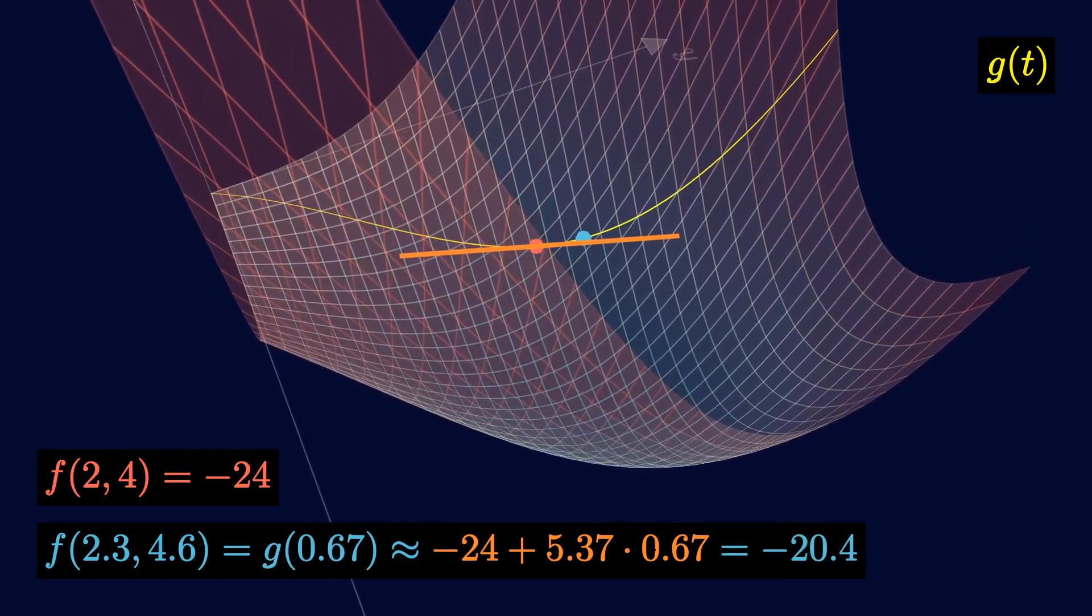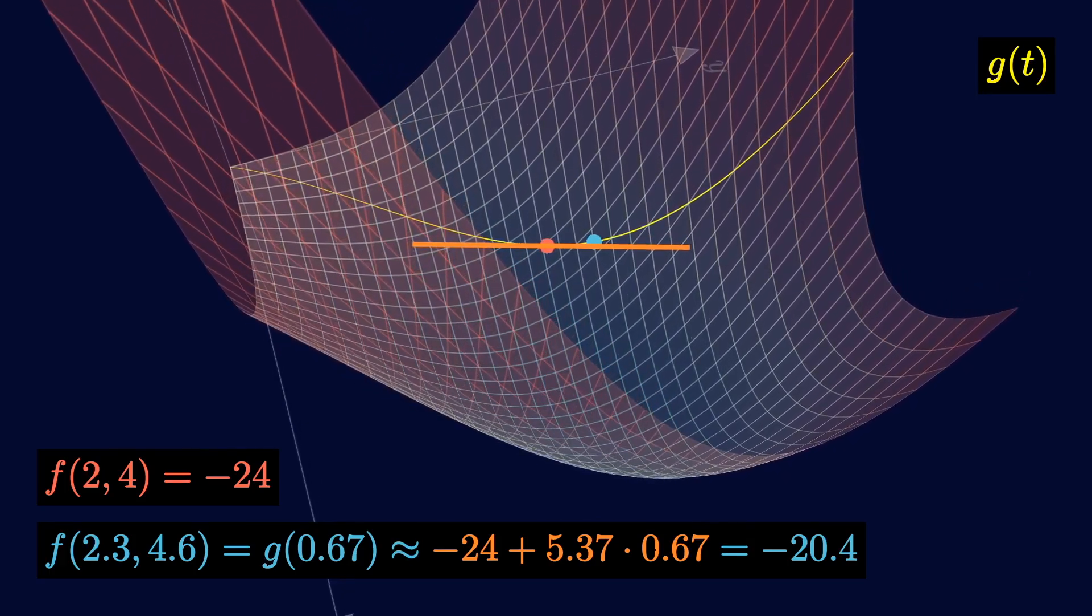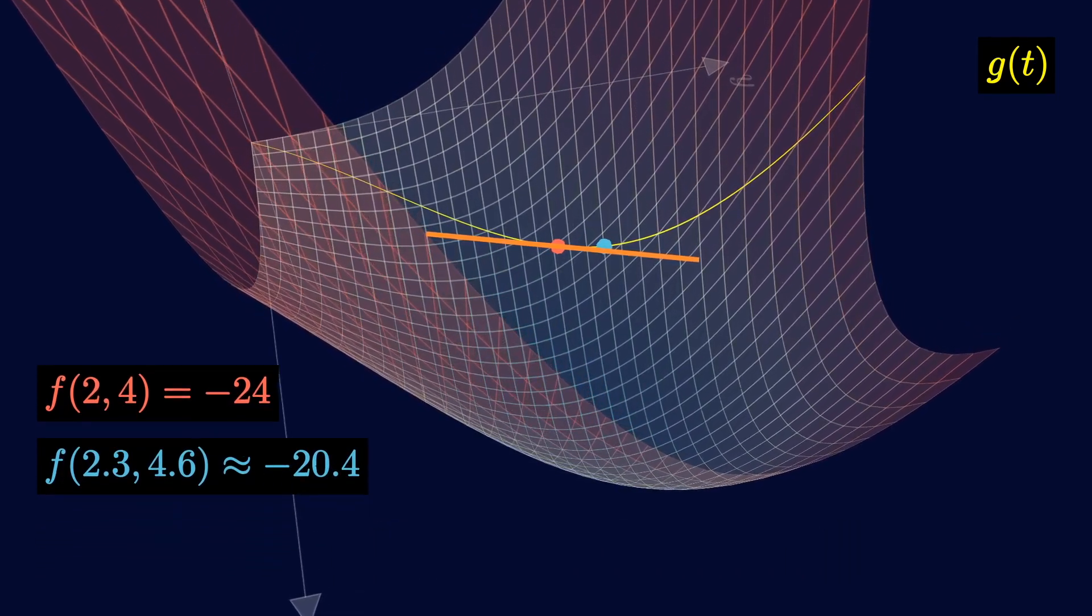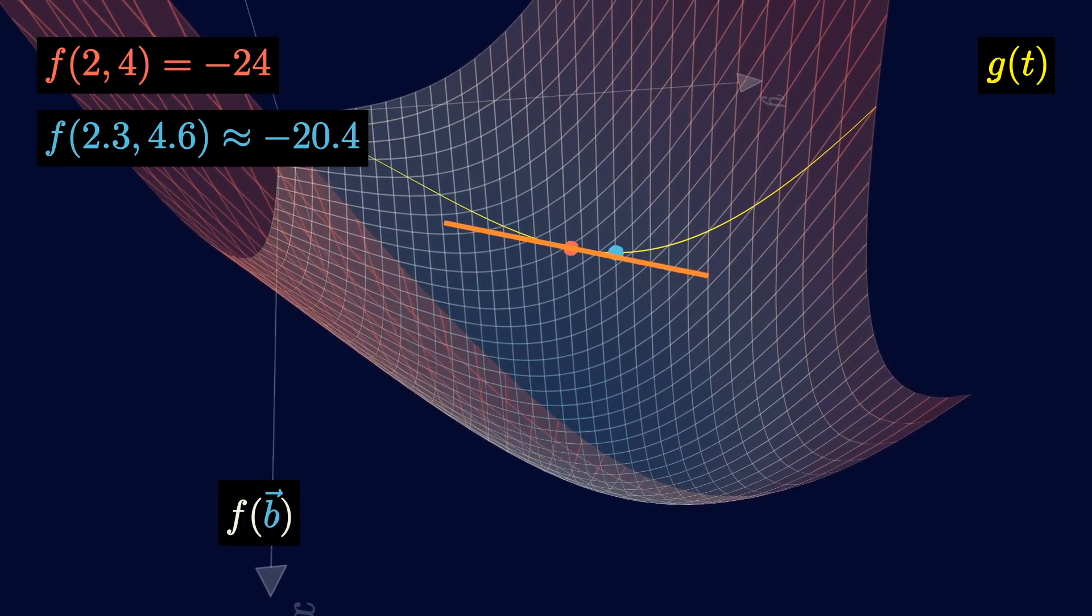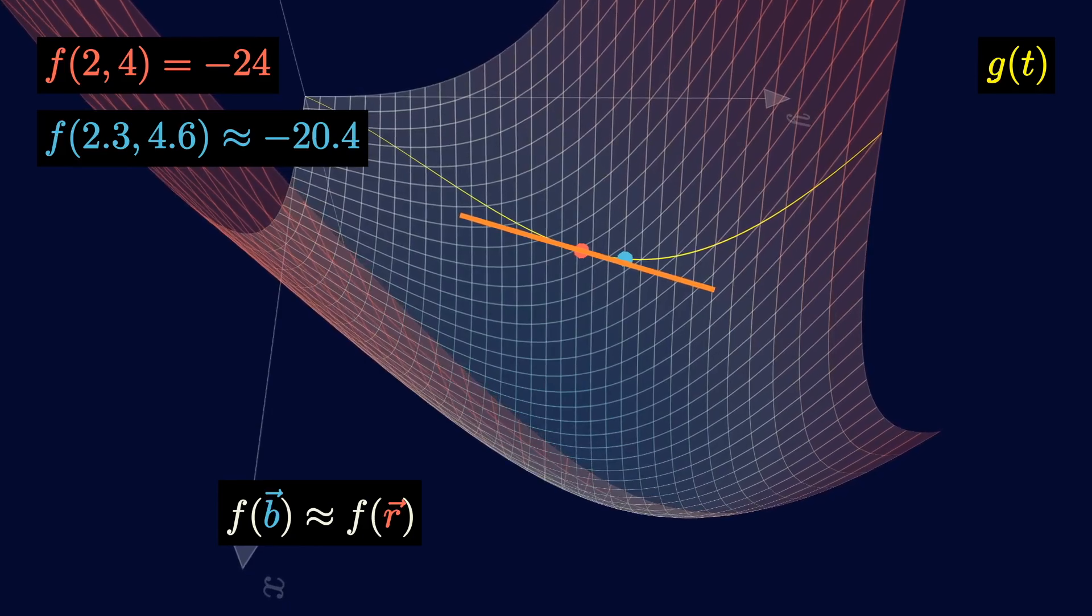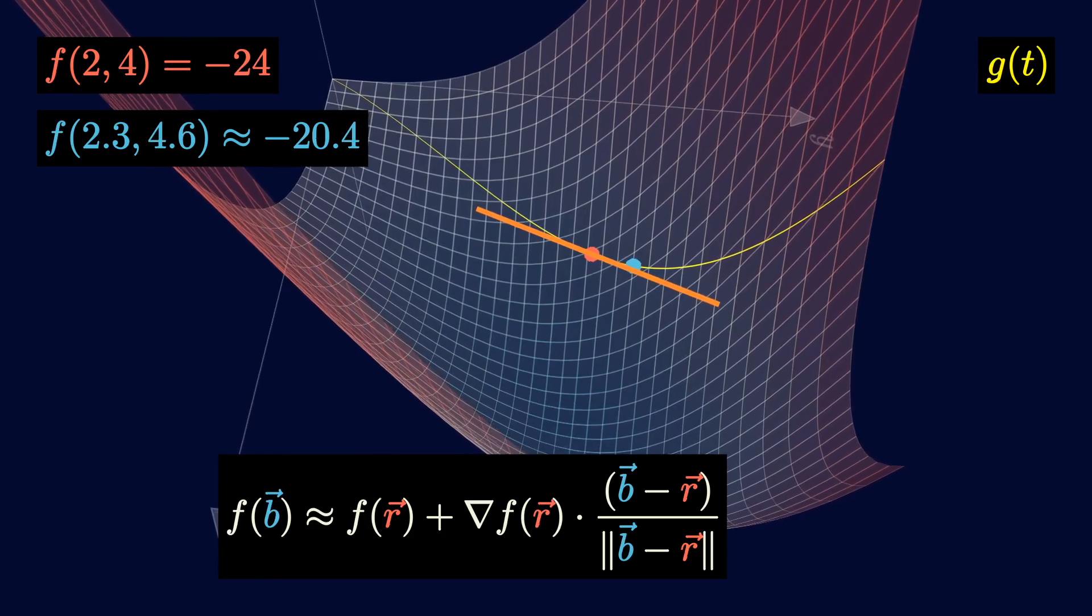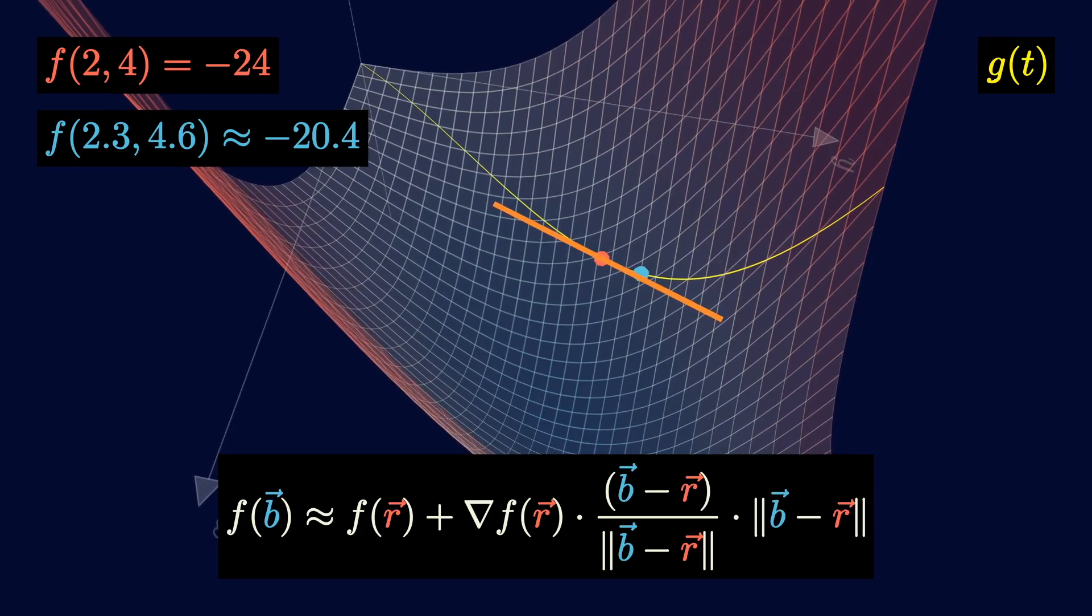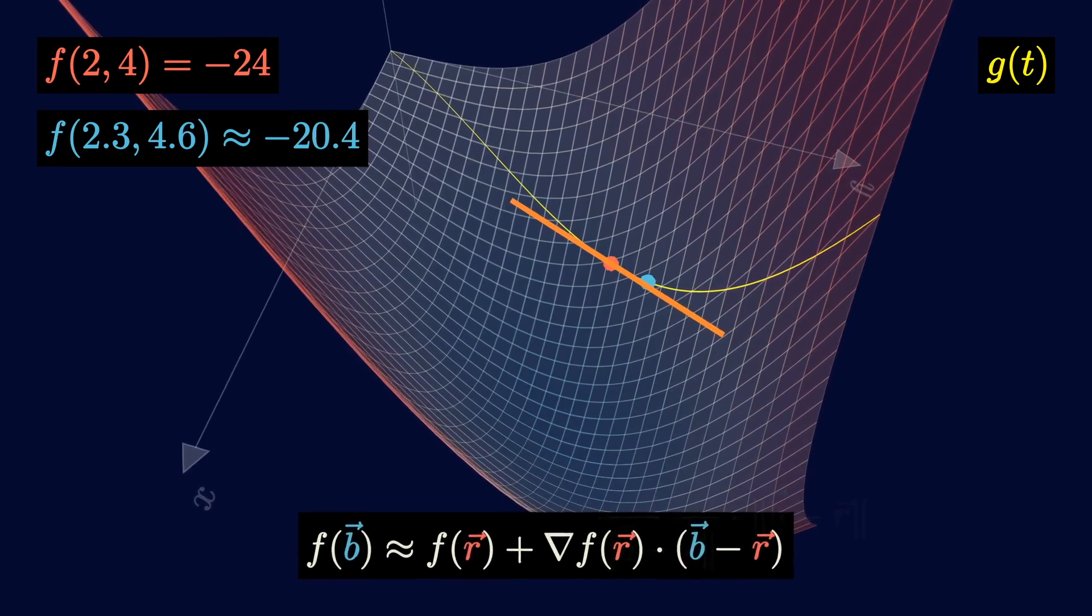This should be a bit more accurate than what we had before because now we're using the gradient information in addition to the value. We can use this process more generally. If b is a vector representing the blue point, the function at b is approximately the function at the red point, which we denote as r, plus the directional derivative, which is the gradient at the red point times the unit direction towards b, all multiplied by the distance between the two points. These distances cancel out, so we have this expression.